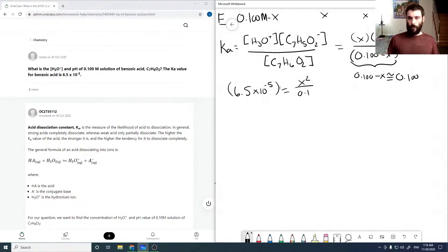Is equal to X squared over 0.1. And so then solving for X squared here, we have X equals the square root of 6.5 times 10 to the minus 6. So solving the square root, we get X equals 2.55 times 10 to the minus 3 molar.